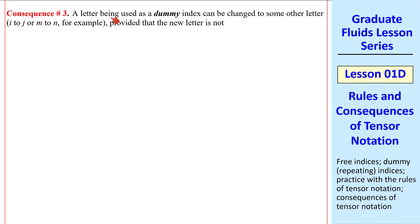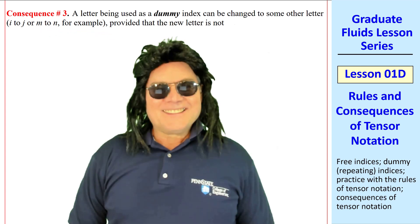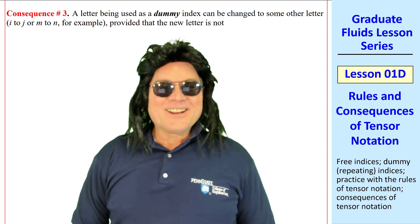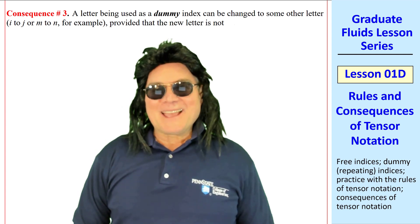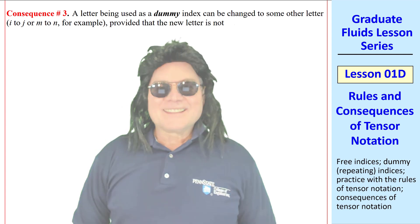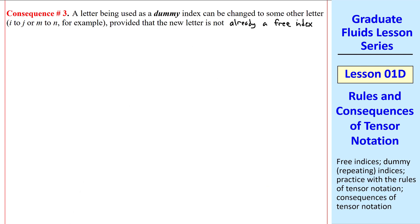Consequence 3, a letter being used as a dummy index can be changed to some other letter, i to j or m to n, for example. Looks like I didn't copy all of this rule. That's okay. We all make mistakes sometimes. You're right about that. I'll fill it in here, provided that the new letter is not already a free index in the expression. Why not? It would violate rule number 4.